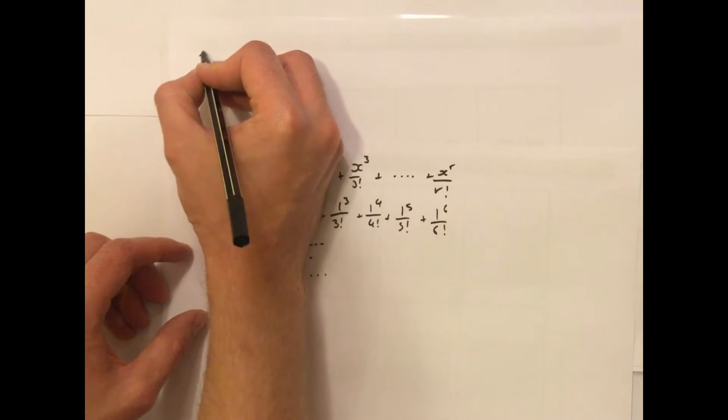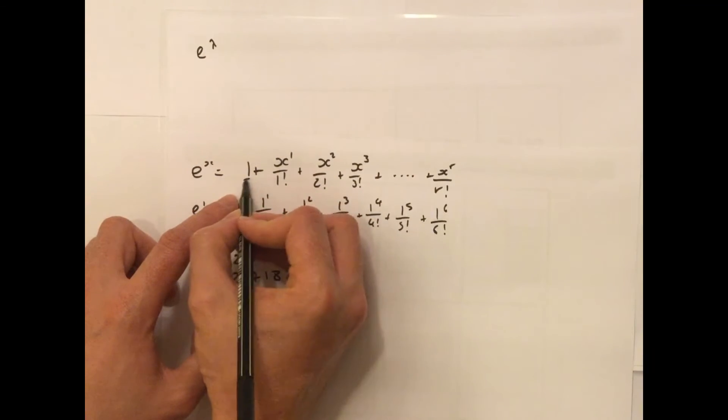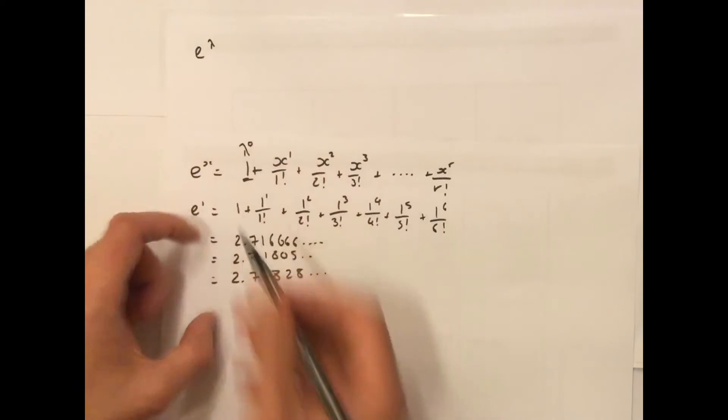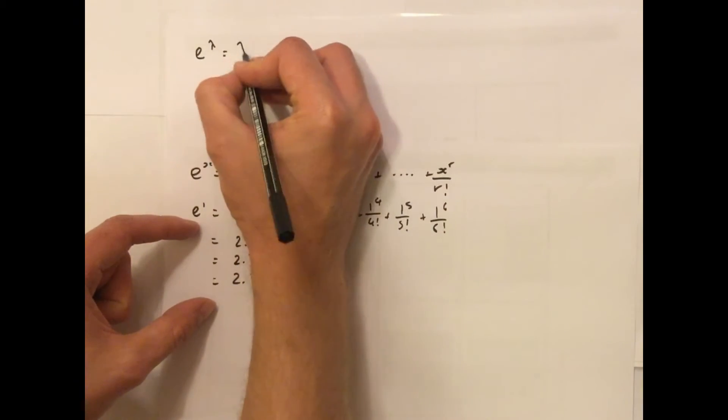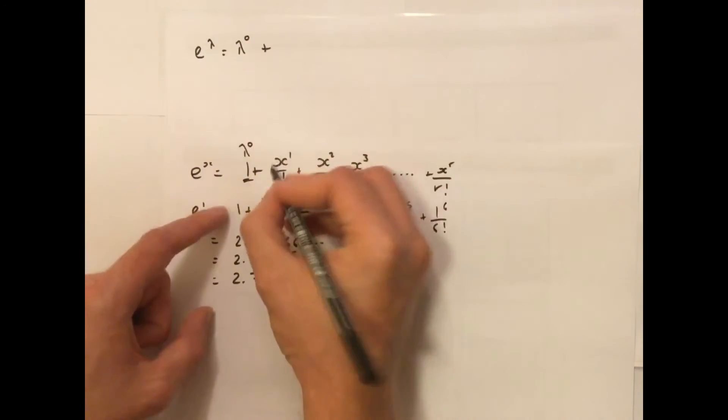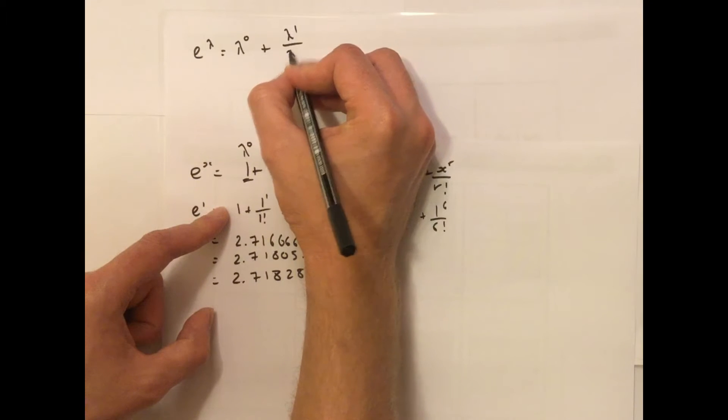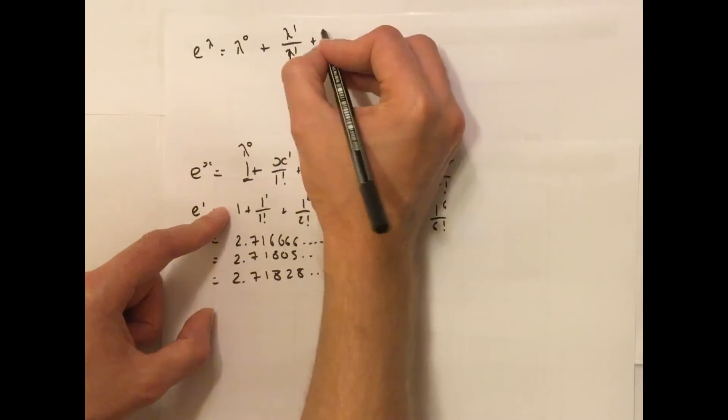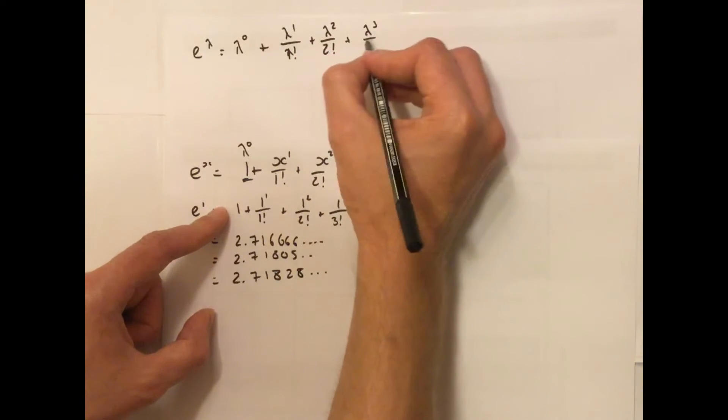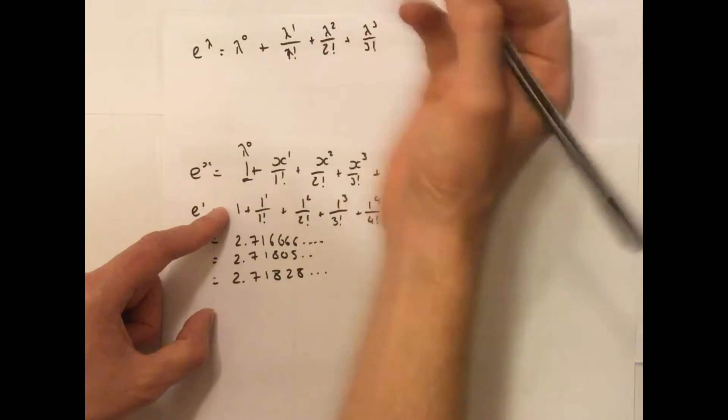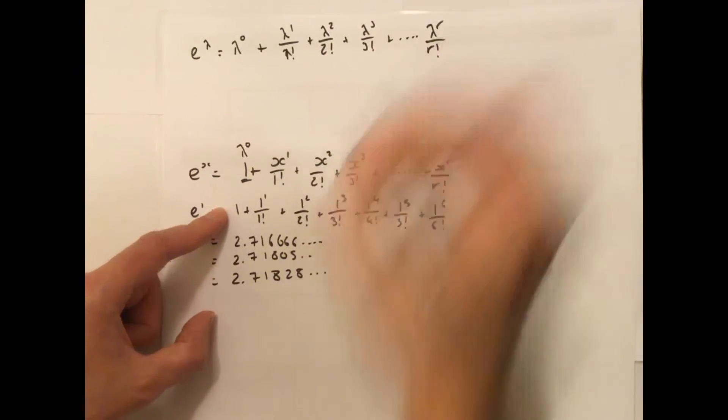So, we're going to replace the x with a lambda. Now, 1 can be written as lambda to the power of 0, because anything to the power of 0 is just 1. So, λ^0 + λ^1/1! + λ^2/2! + λ^3/3!, etc., all the way again up to λ^r/r!.